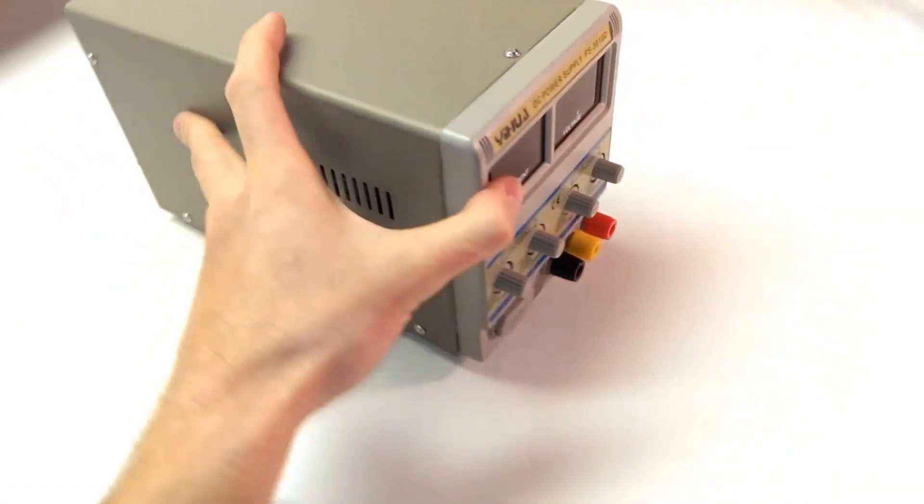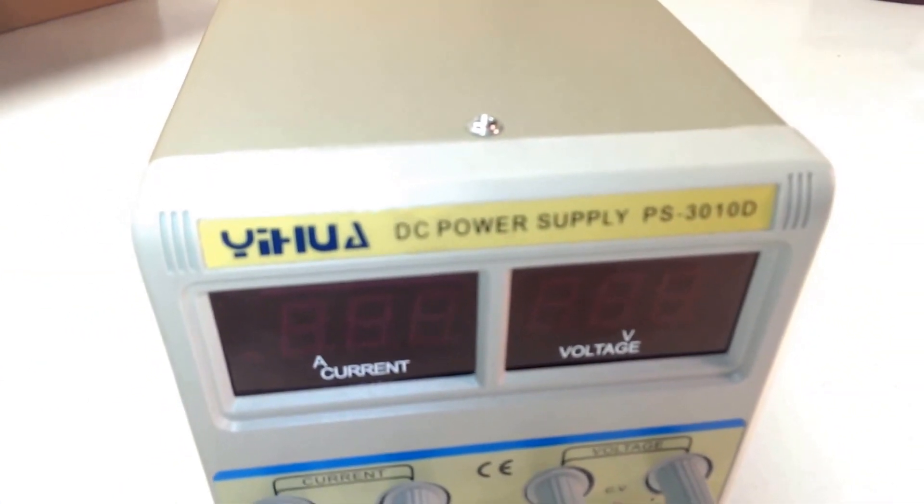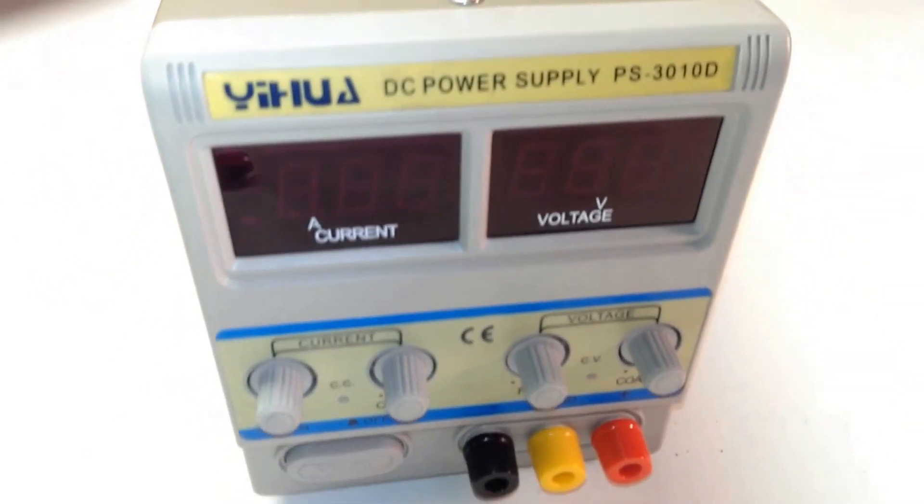All right, there it is. Unboxed. DC power supply PS 3010D. That looks like the correct one.